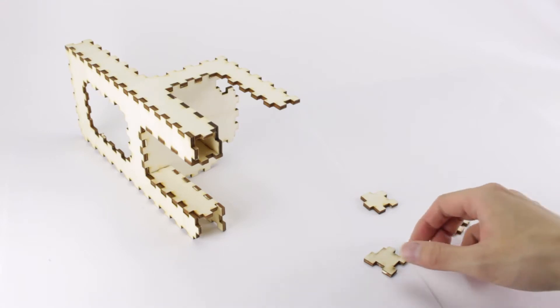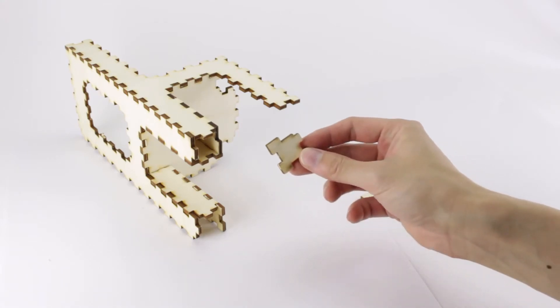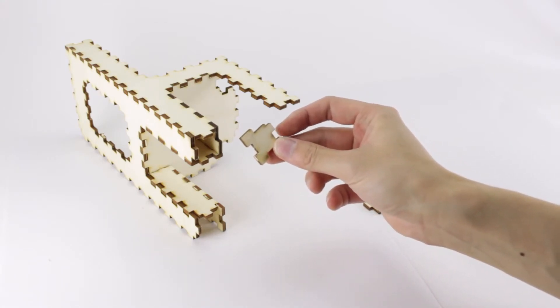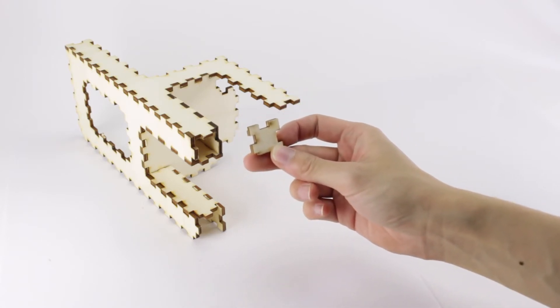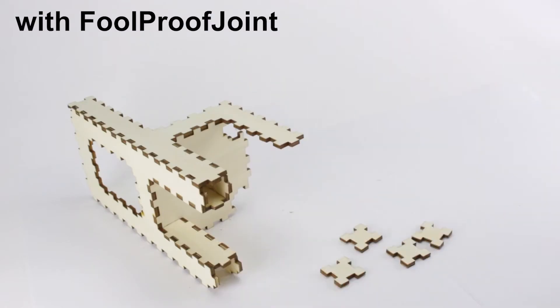Second, it is possible that the user might try to assemble a piece in the wrong orientation, causing the piece to not fit. FoolProofJoint addresses this issue by making pieces symmetric.